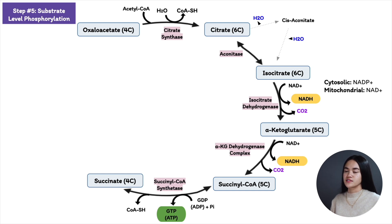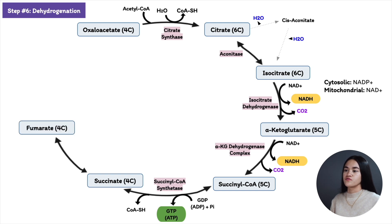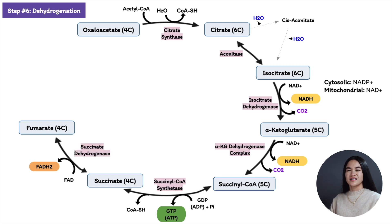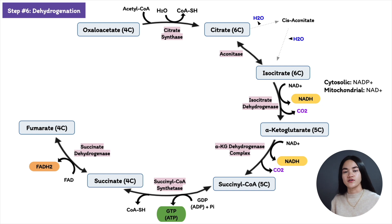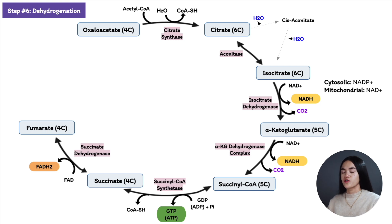In step six, succinate is oxidized to form fumarate in a dehydrogenation reaction, also producing FADH₂. This is carried out by succinate dehydrogenase, which is bound to the inner mitochondrial membrane and covalently attached to FAD. Electrons are transferred to FADH₂, an important electron carrier, which donates its electrons to the respiratory chain. Because succinate dehydrogenase is membrane-bound, electrons can enter the electron transport chain directly.